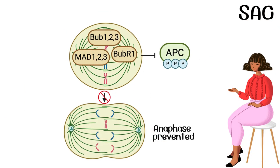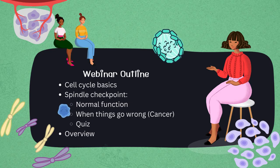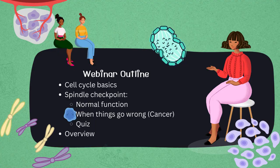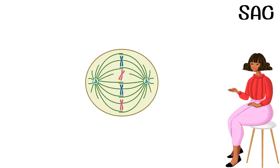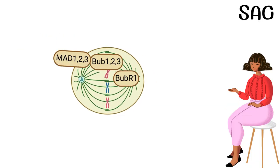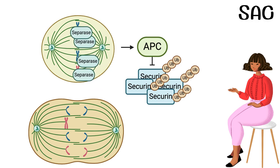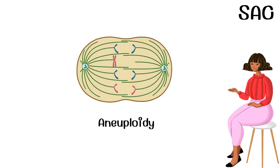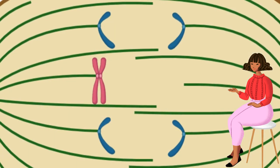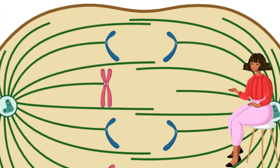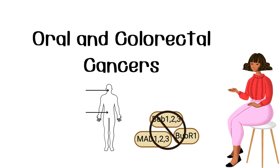When the SAC proteins aren't functioning properly due to mutations, cells cannot detect spindle-chromosome attachment issues and they mistakenly continue into anaphase. This can result in aneuploidy, which is when cells have an abnormal amount of chromosomes. Aneuploidy can contribute to the formation of tumors, including oral and colorectal cancers.